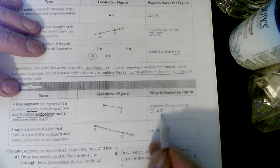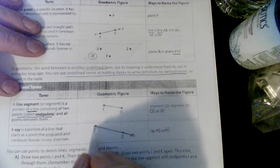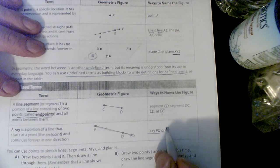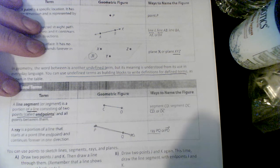With a line it doesn't matter the direction that you name it—CD or DC—but with a ray you must start from the endpoint. You can either say ray PQ or draw a ray over the top of it.